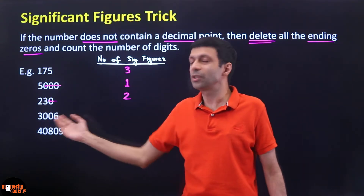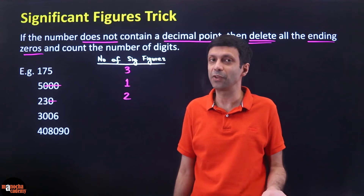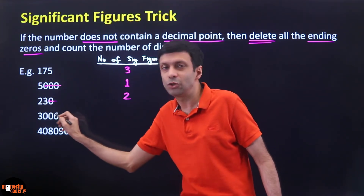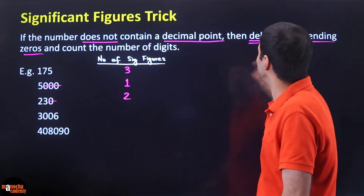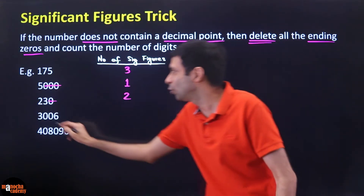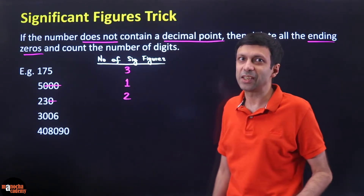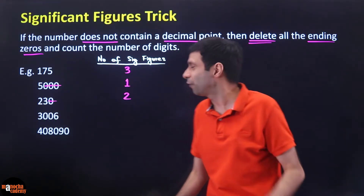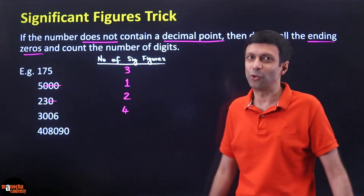Now what about 3006? Should I delete these two zeros in the middle? No — only the ending zeros, only the zeros at the end. So please do not delete those middle zeros. Here all the digits are significant, giving us 1, 2, 3, 4 — four significant figures.